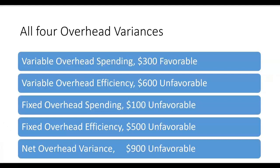Let's look at all four overhead variances: variable overhead spending = $300 favorable; variable overhead efficiency = $600 unfavorable; fixed overhead spending = $100 unfavorable; fixed overhead volume = $500 unfavorable. The only favorable variance was the variable overhead spending variance. Our net overhead variance, netting all four, comes out to $900 unfavorable. These overhead variances come as a team, so we're not done until we net all four to one figure — in this case, $900 unfavorable.